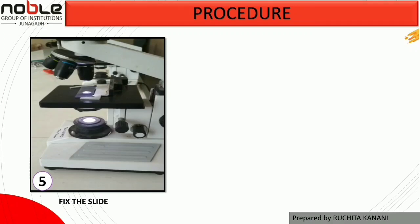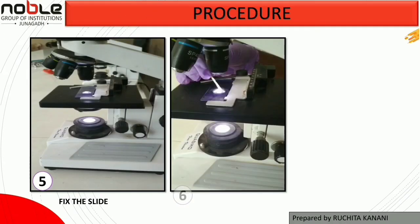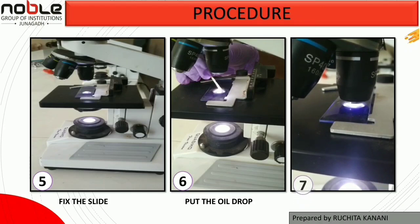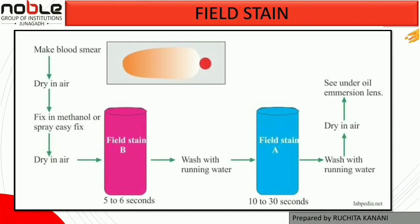When examining under the microscope, put a drop of paraffin oil or cedar oil over the thin end of the smear and examine under the oil immersion lens. Here is a summary chart of the entire Fieldstain procedure: make blood smear → dry in air → fix in methanol → dry in air → dip into Fieldstain B for 5–6 seconds → wash with running water → dip into Fieldstain A → wash → dry in air → examine under oil immersion lens.